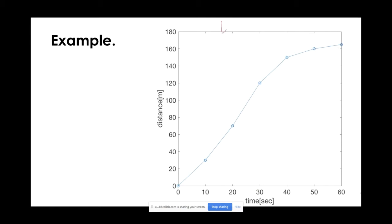This is a time-space diagram where the x-axis is time and the y-axis is distance or location. If you plot the data points — at time 0 the vehicle is at location 0, at time 10 seconds it's at 30, at time 20 seconds it's at 70, and so on — and connect all the dots, you get the trajectory of the vehicle. That is how we draw the trajectory given the location of a vehicle over time.